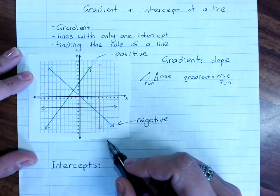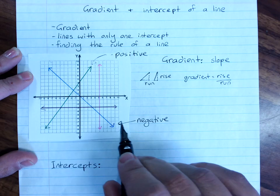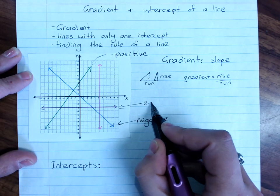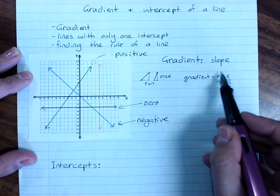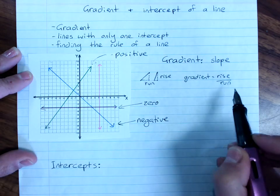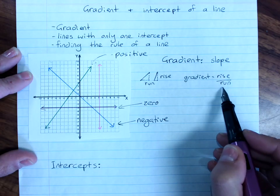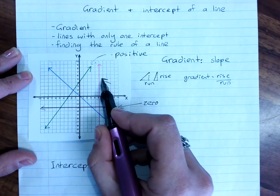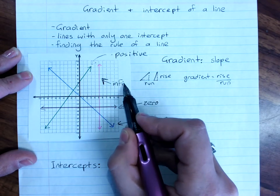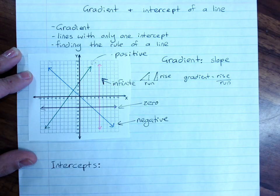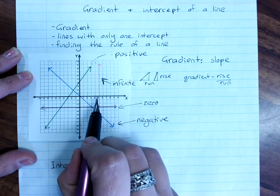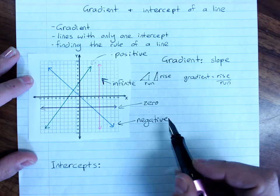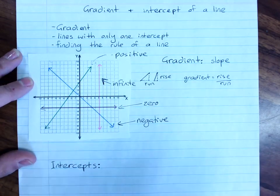Horizontal and vertical lines have gradients. This one here has a gradient of 0, because it doesn't go up at all, doesn't matter how far it goes across, and 0 divided by anything is 0. And a vertical line either has an infinite or an undefined gradient, because its run across is 0. We can't divide by 0, and it goes up forever, so its rise is infinite.